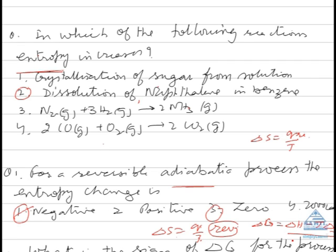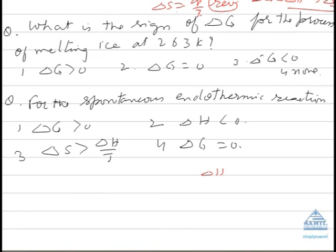So if the process is endothermic means delta H is positive, then delta S is also positive, then delta G can be negative only if T delta S is greater than delta H. So for a process to be spontaneous T delta S must be greater than delta H.